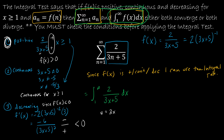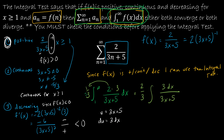Let u = 3x + 5, so du = 3 dx. I can rewrite the integral by moving the 2 outside and introducing a factor of 1/3, giving (2/3) times the integral of 3 dx over (3x + 5). Integrating gives (2/3) times the natural log of the absolute value of u, or (2/3) ln(3x + 5), evaluated from 1 to infinity.